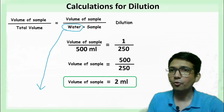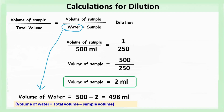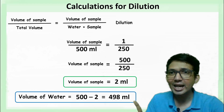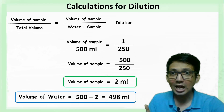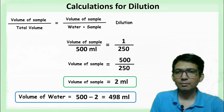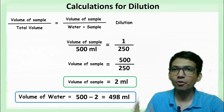The volume of water required is total volume minus sample volume: 500 minus 2 = 498 milliliters. So when you mix 2 mL of sample with 498 milliliters of water, you get a dilution of 1/250. This is how you do calculations for dilution.